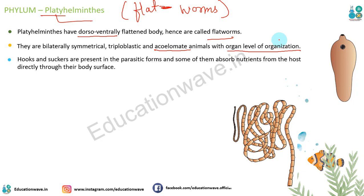Inke paas hooks aur suckers hote hain - pehle host pe hook karte hain aur phir usse suck karte hain, jaise mosquito pehle hook karke sting daalti hai phir suck karti hai. Ye parasitic forms hain - apne host pe depend karte hain. Agar host nahi milta toh apna life cycle complete nahi kar paate aur reproduce nahi kar paate.